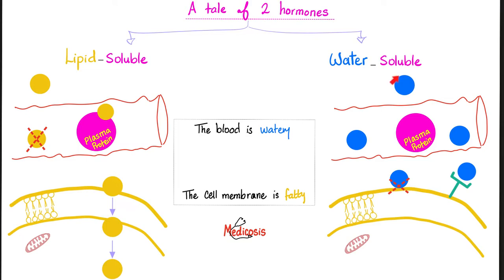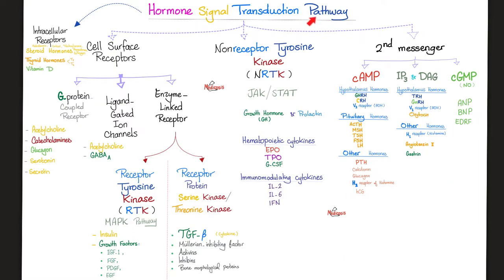Conversely, if you are water-soluble, you can float in the blood because blood is water. However, when you reach the membrane, you will never diffuse. That's why we have to put the receptor on the outside to wait for you. Once you bind to your receptor, it's super fast — just like flipping a switch. That's why water-soluble hormones are faster in action. How did you flip the switch? By sending the signal from the membrane to the nucleus to tell the nucleus to perform the desired action.